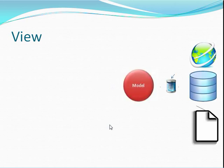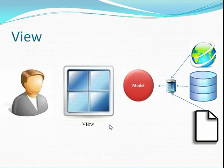Views are particular visualizations of one or more of your models. When you pass a model to a view, it goes about putting a visual face on that model for the outside world to see. Models and views do not share a one-to-one relationship — you can have many different views that visualize the same model in many different ways. While views understand particular models, models are always completely ignorant of views.